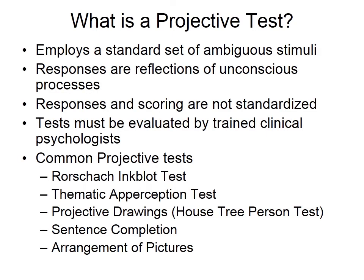A projective test employs a standard set of ambiguous stimuli — these can be inkblots, word completion stems where you finish half-done sentences, or pictures you put a story to. Responses are seen as reflections of unconscious processes. Scoring is often not standardized, and most efforts at standardization have not met with much success. Even with standardized scoring for the Rorschach inkblot test, when those standards are applied and predictions are made, most studies indicate that the scores do not actually predict future behavior.